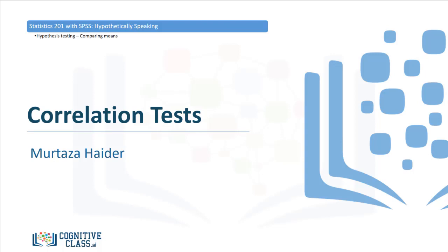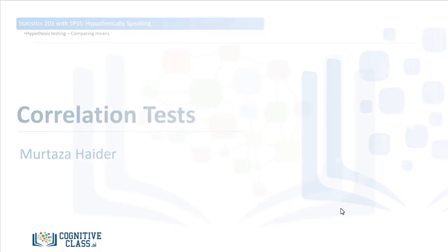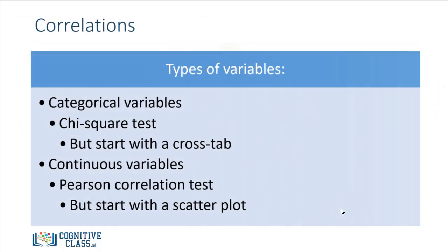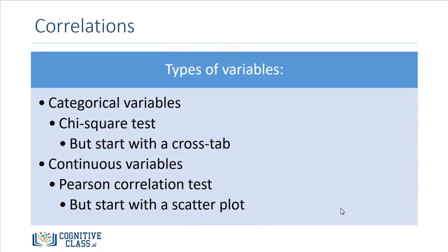Moving ahead from comparing the average values between two or more groups, we're looking at two variables and we want to know if there's a statistically significant correlation between them. For this, we look back to the earlier definition of variable types, and we generally define variables in two groups: categorical variables and continuous variables. So if we go back to our teaching ratings data,